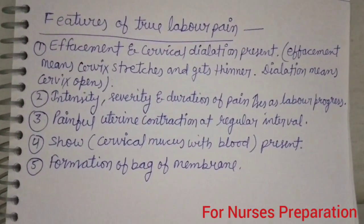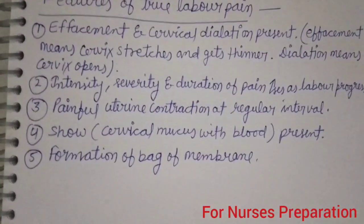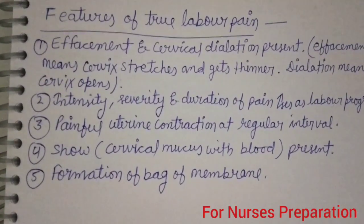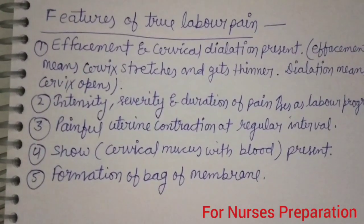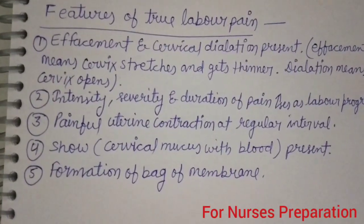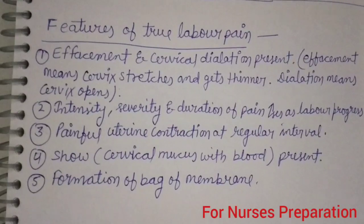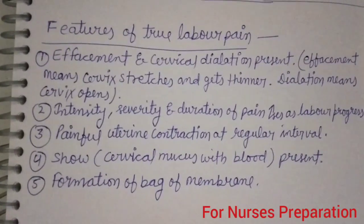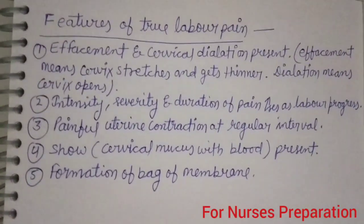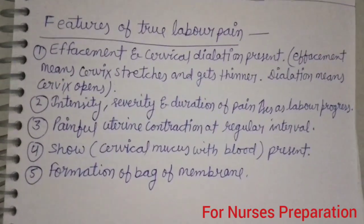Point number 3: Painful Uterine Contraction at Regular Interval. This is the most important feature by which you can easily differentiate between True Labour Pain and False Labour Pain — painful uterine contractions occurring at regular intervals.